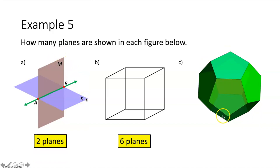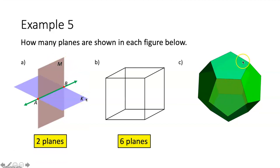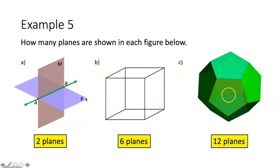Lastly, we have this dodecahedron. If we count the planes: six on the front and six on the back, adding those together we get 12 planes. The sides of three-dimensional figures can be called planes as long as they're flat surfaces. This is called a dodecahedron because it has 12 faces — 12 planes.